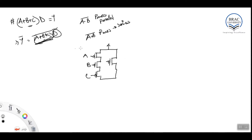Now let us check whether the pull-up network is working. We are designing y-bar. We can see that when d is zero, the PMOS for d opens up, vdd is connected to the output, and we get output equal to one. If d is one, that path is open, and for output to be one in the NAND sense, either d or (a + b + c) must be zero.